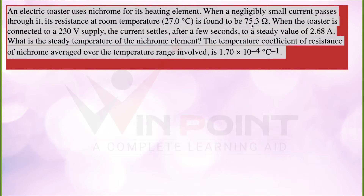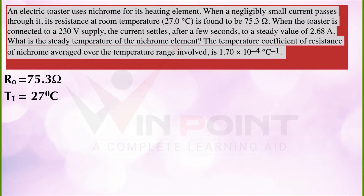The original resistance R₀ is given as 75.3 ohms. The room temperature is taken as T₁ = 27°C. There is no need to convert that into Kelvin — we can work in degrees Celsius only. R₀ is the original resistance of the nichrome at 27°C. Then, when the toaster is connected to a 230 volt supply, it is connecting to our home circuit.